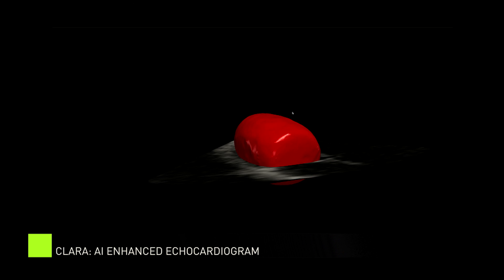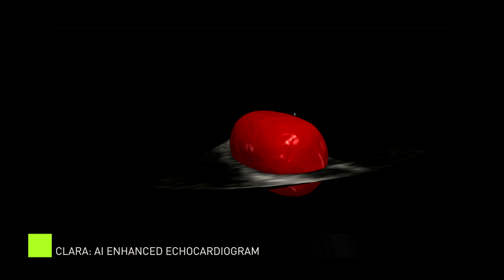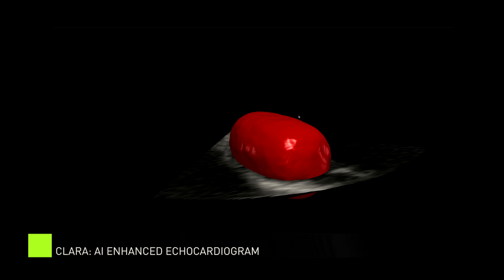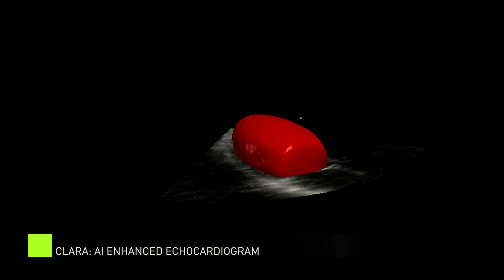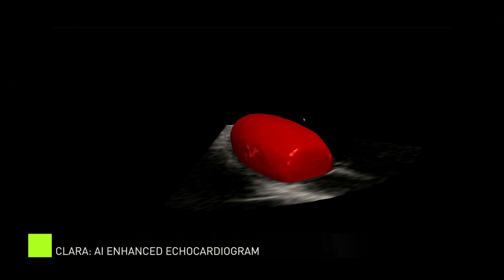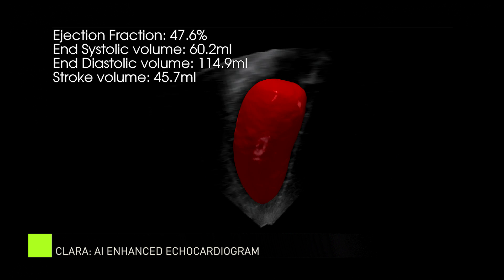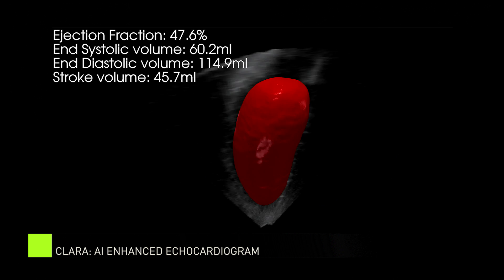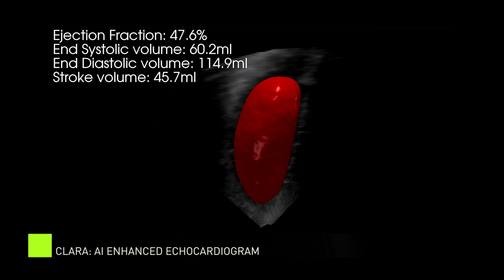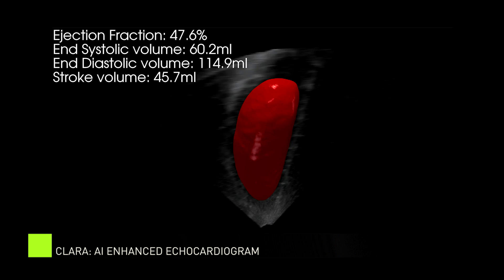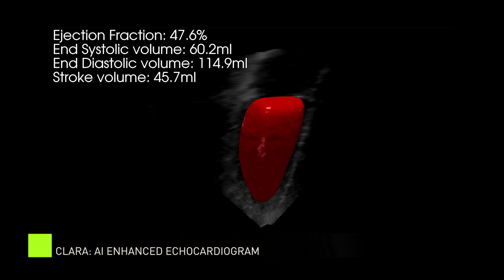Unlike other echocardiographic methods, 3D methods of ejection fraction calculation make minimal assumptions of the left ventricular cavity shape. These 3D methods have been shown to be less variable and more accurate than other echocardiographic methods because the entire left ventricular cavity will be detected.